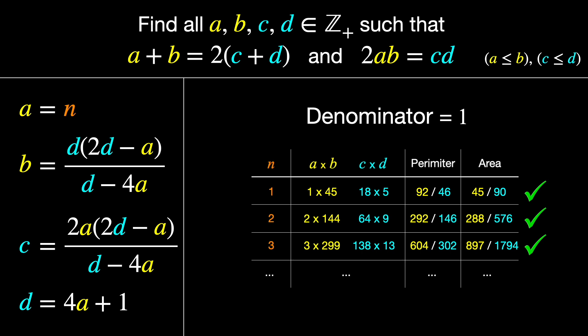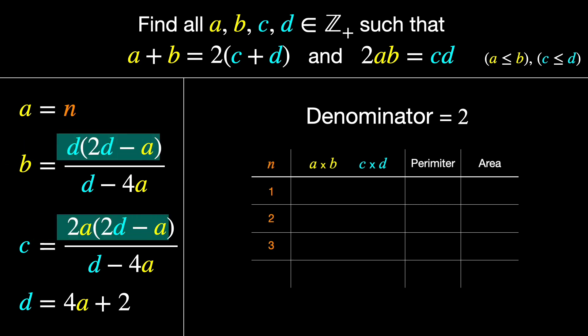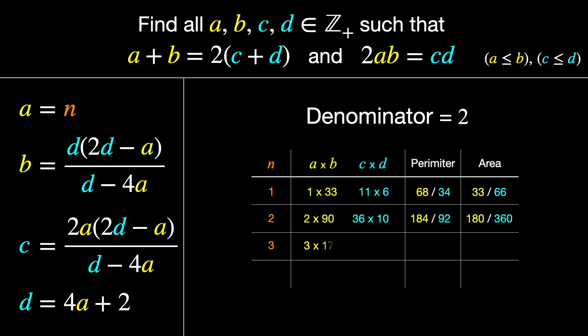Alright, we're getting somewhere. But what other denominators work? How about 2? Well, if both numerators are even numbers, we're good to go. Clearly, C's numerator is even, since it's multiplied by 2. And B has D in the numerator. And since D is 4A plus 2, it's clearly even. So this should work, too. And there's another family of solutions.